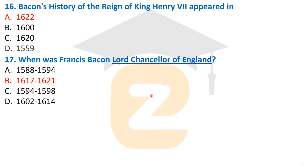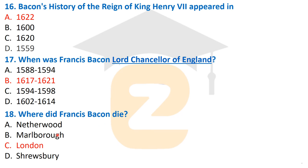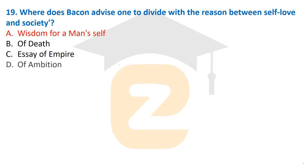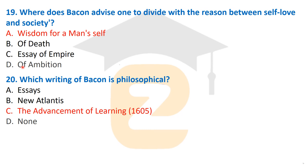Question 18: Where did Francis Bacon die? That was in London in 1626. Question 19: Where does Bacon advise one to divide with reason between self-love and society? That was in his essay 'Wisdom for a Man's Self,' where he advises one to divide with reason between self-love and society.